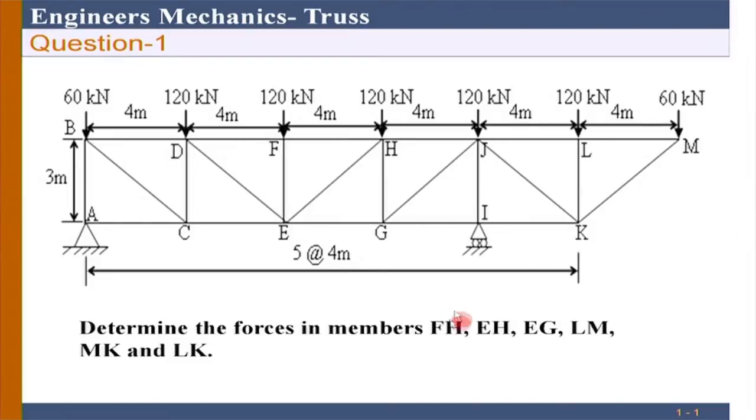Again, determine the forces in members FH, EH, EG, LM, MK, and LK. You could do this by method of joints or by method of sections as well. I just need the numbers, at least for FH, EH, and EG, that will be more relevant.